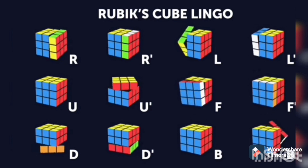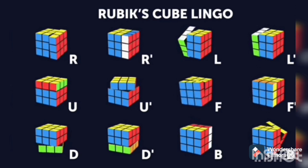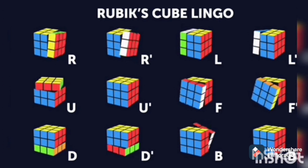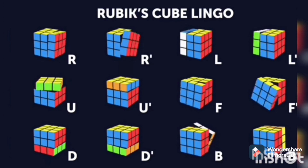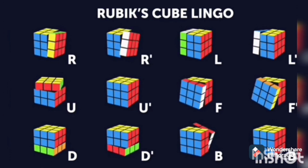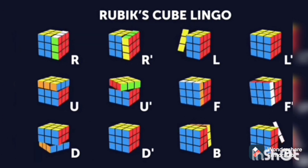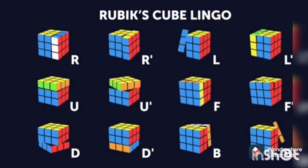L' means anticlockwise 90 degrees. R, U, F, D — these all mean clockwise 90 degrees. And apostrophes added to all the letters mean anticlockwise 90 degrees.